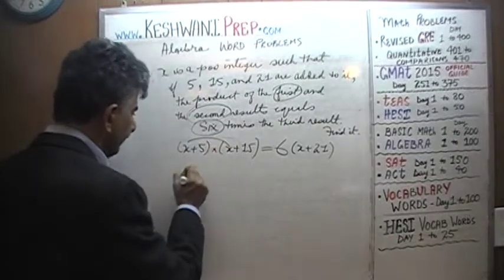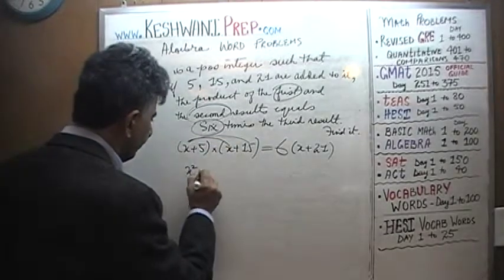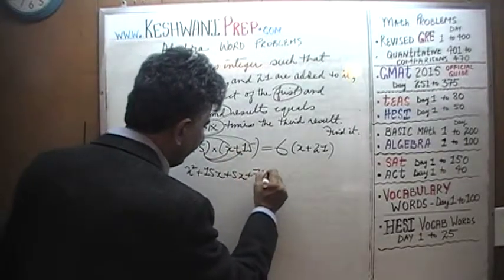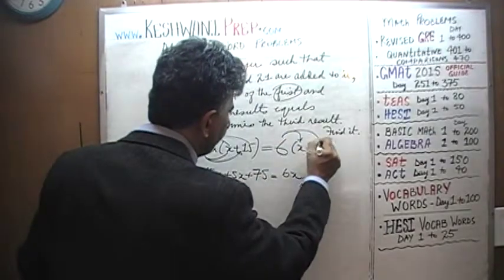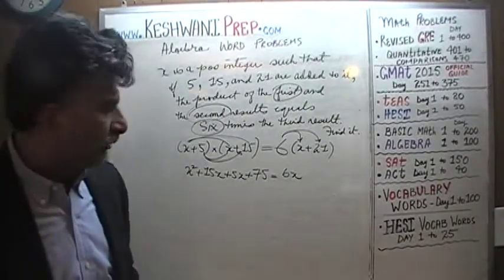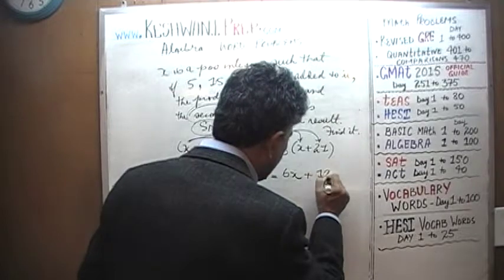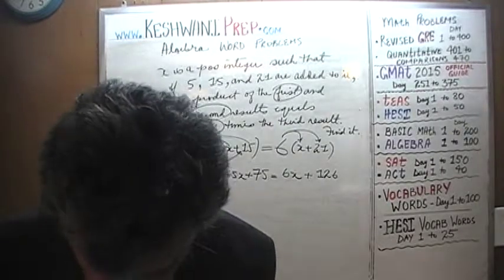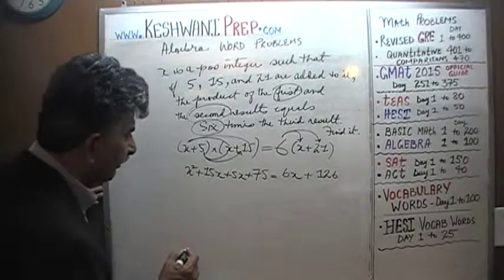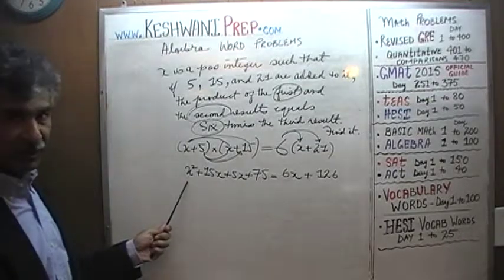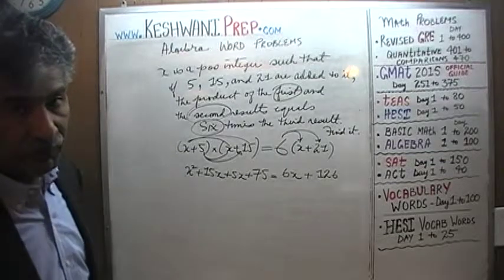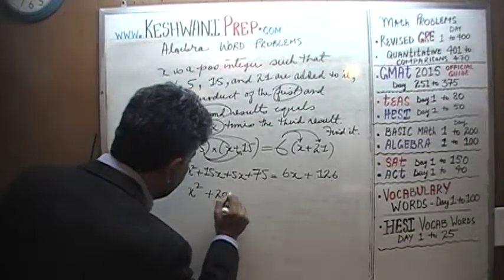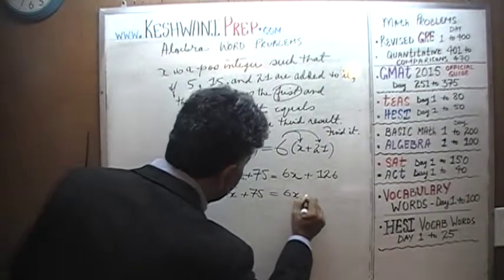Expanding: x times x is x squared, x times 15 is 15x, plus 5x, and 5 times 15 is 75. This has to equal 6 times x, which is 6x, plus 6 times 21 — since 6 times 20 is 120, that's 126. So we have x squared plus 20x plus 75 equals 6x plus 126.